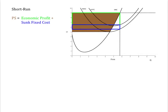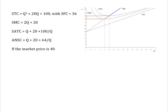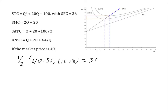Let's find producer surplus for an example. The diagram shows short-run supply as short-run marginal cost running from the shutdown point, the minimum point on the average non-sunk cost curve, through the break-even point and beyond. If the market price is 40, so that the seller is just breaking even, then producer surplus is the area of the trapezoid formed by the vertical axis, short-run marginal cost, and prices at the shutdown and break-even points. One half of (40 minus 36) times (10 plus 8) equals 36, which is the sunk fixed cost.